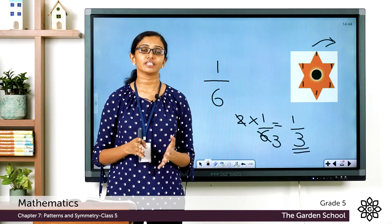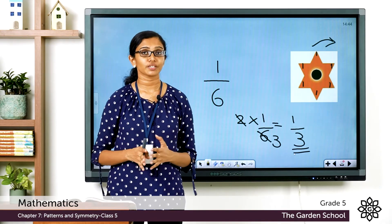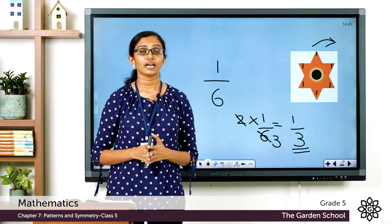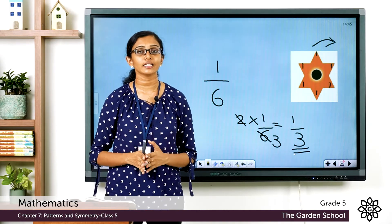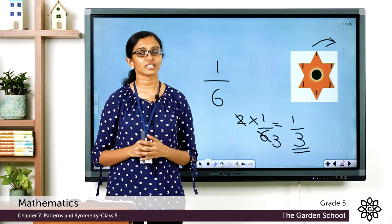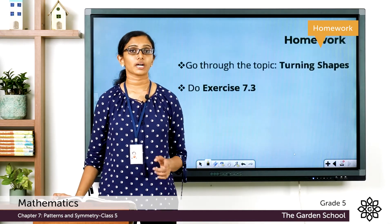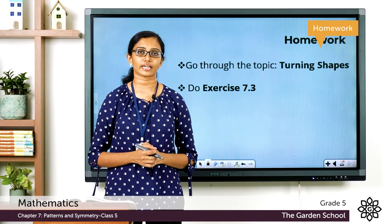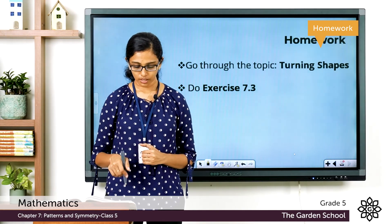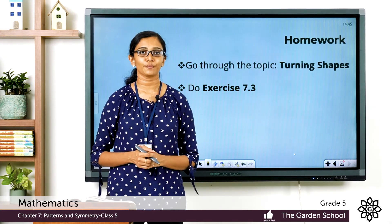Children, I hope this is clear to you. Today we have learned about turning shapes and designs and about rotational symmetry. Rotational symmetry means that an object or image can be rotated about a fixed point or its own axis and the rotated image looks exactly the same as the original image. Now you have to go through the topic 'Turning Shapes' on pages 121 and 122 of your textbook, then work out the four questions in Exercise 7.3 on page 122. That's all for today — we'll meet in the next class with a new topic. Bye!